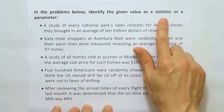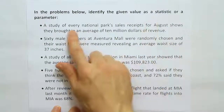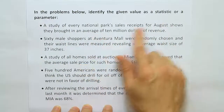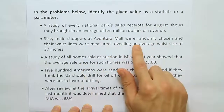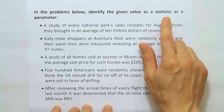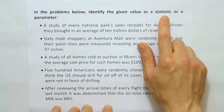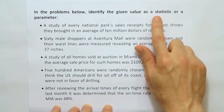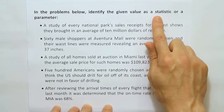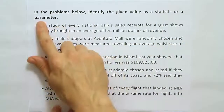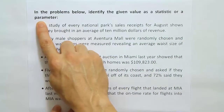Basically, when you read the problems, you're going to hear something like an average or proportion reported, and you're going to try to look at where it came from. If it came from a sample, it's a statistic. If it came from the population, it's a parameter.